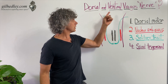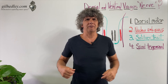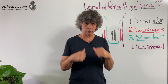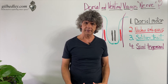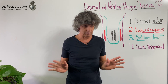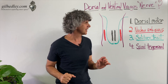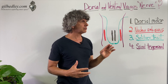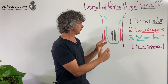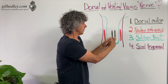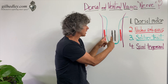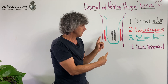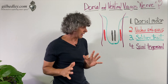Does dorsal and ventral vagus nerve mean we have a vagus nerve running down our back and another one running down the front? That's not what it means. Dorsal and ventral vagus nerve is actually referencing the relative positions of the vagal nuclei on the medulla oblongata — let's make it more simple.